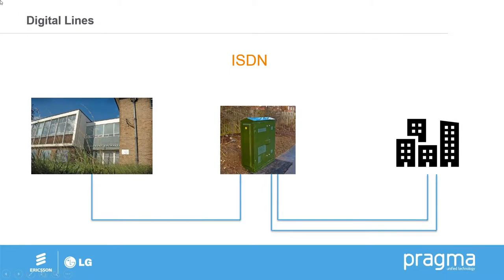ISDN is a lot more common in businesses. It's very unlikely that you'd have an ISDN circuit at home. What ISDN is, is still a copper cable delivered from the telephone exchange to the green cabinet, and then from there we bond two copper cables together and deliver them to your property. That gives you the ability to make two concurrent phone calls at the same time under the same telephone number. The one disadvantage of ISDN is that it comes in pairs — two to start with, then you could purchase a further two making four, then six, and so on. With that, you are paying for two sets of line every time, so it can work out to be quite expensive.